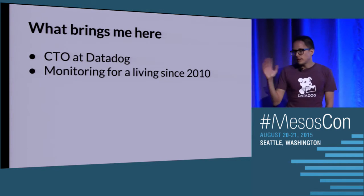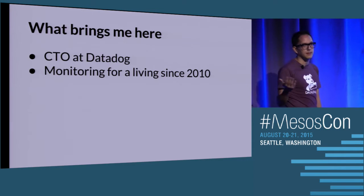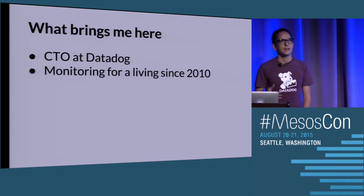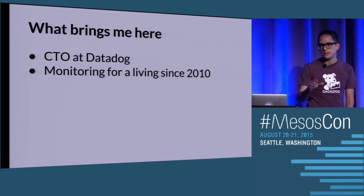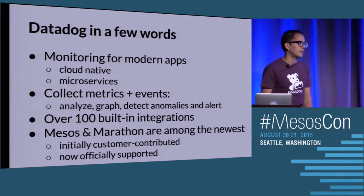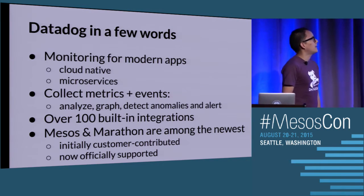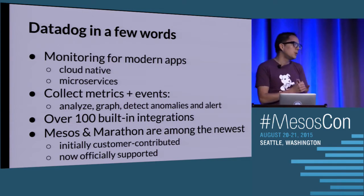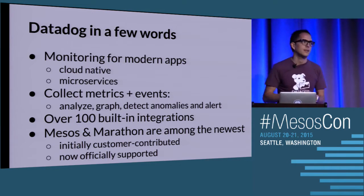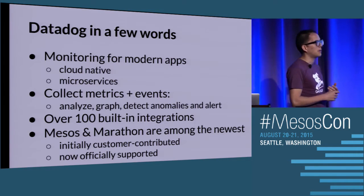CDO at Datadog, been monitoring for a living for about five years. We've seen a lot of exciting stuff in containers and orchestration, and I want to bring some perspective to that as we've developed monitoring for these new environments. What Datadog does in a few words is monitoring for modern apps. You can go to our website. It works really well for cloud native apps and microservices. We collect metrics and events so you can analyze, graph, alert on them, detect anomalies, and have a good sense of what's happening across your platform.